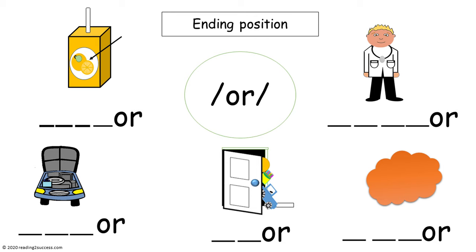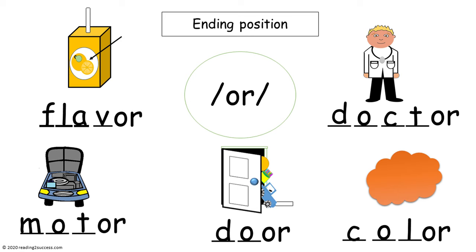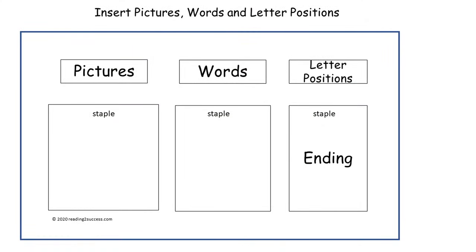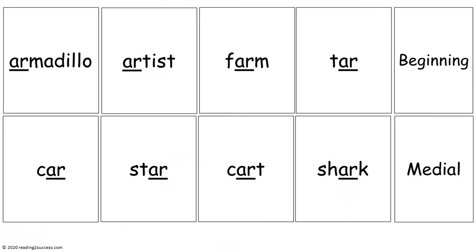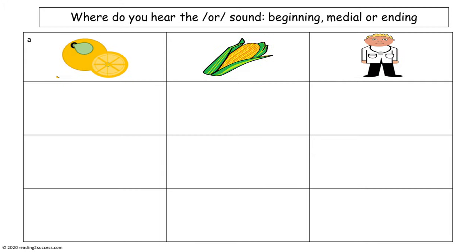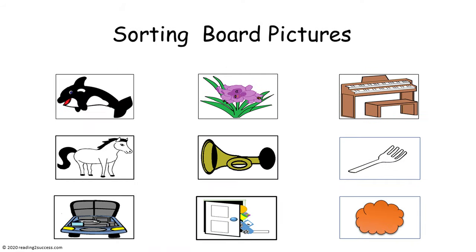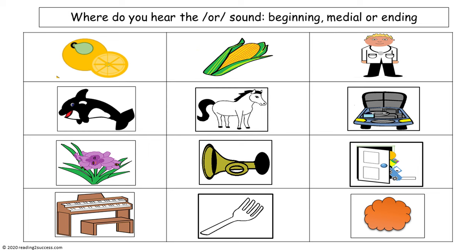Have kids make the words with O-R in the ending or final position. These are the three templates needed to make the word picture sorting mat, and two templates for the sorting board activity. In the completed sorting board: beginning sound — orange, orca, orchid, and organ; medial sound — corn, horse, horn, and fork; ending or final sound — doctor, motor, door, and color.